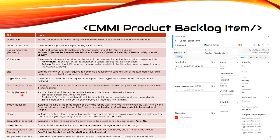Priority is a required field with values of one, two, or three. Priority one means the product cannot ship without the item. Priority two, which is the default, means the product cannot ship without the item but it doesn't have to be addressed immediately. Priority three means implementation of the item is optional based upon resources, time, and risk.